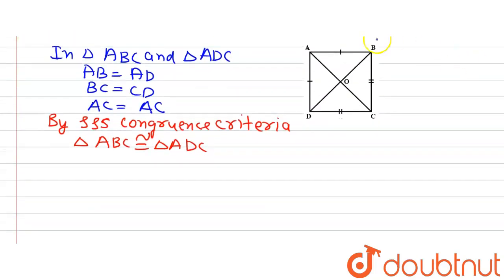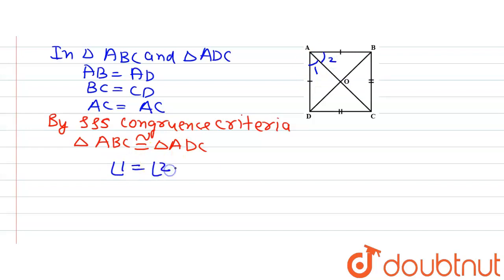Since triangles ABC and ADC are congruent, if we call the relevant angles angle 1 and angle 2, then by CPCT — corresponding parts of congruent triangles — angle 1 is equal to angle 2.